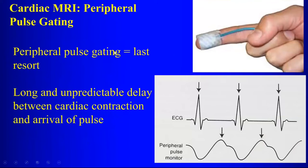If vector gating still doesn't work, as a last resort you can do peripheral pulse gating, where a transducer attached to the finger picks up the peripheral pulse. The problem is that by the time the pulse wave reaches the finger, there's a long and unpredictable delay between the actual cardiac contraction and the arrival of the pulse at the transducer. So you don't want to use this unless you absolutely have to.